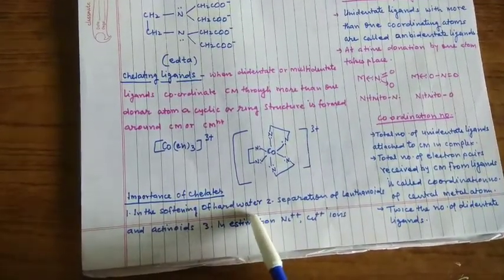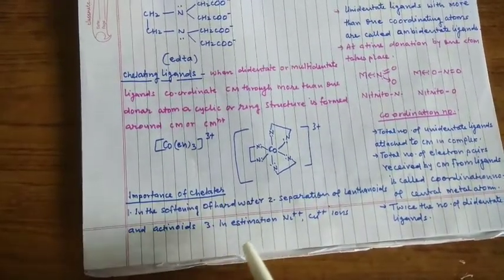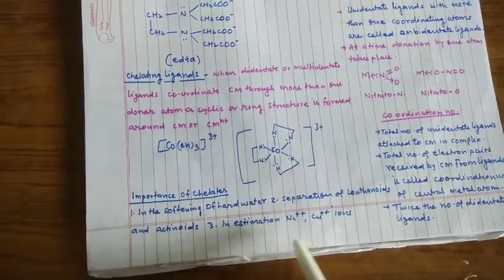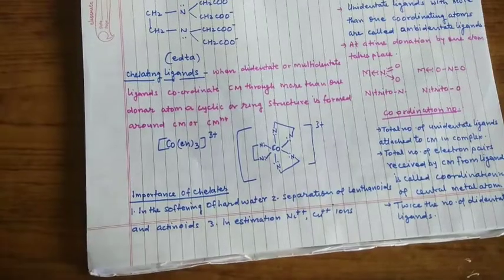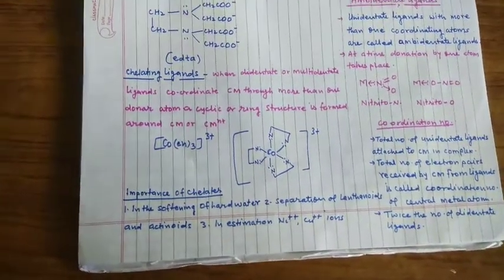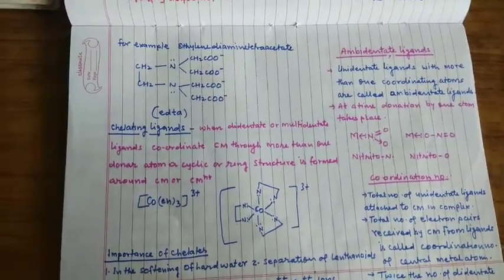Importance of chelates: in softening of hard water EDTA use होता है, separation of lanthanides and actinides, and in estimation of nickel, copper, iron। ये कुछ importance है chelates के, इसके uses हैं। EDTA जो है ethylene diamine is good chelating ligand, ये hexadentate ligand भी है and it is used in softening of hard water.